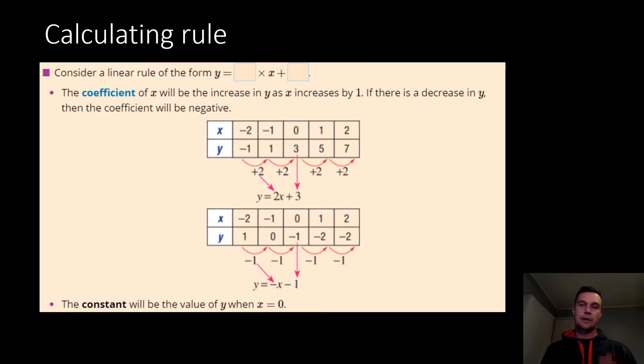So you're going to make sure you write this first part down. And this is how we calculate - it's kind of like a hack of how you might find a rule using either a table or a graph. So we're always looking for the coefficient and the constant. The coefficient of x will be the increase in y as x increases by 1. If there is a decrease in y, then the coefficient will be negative.